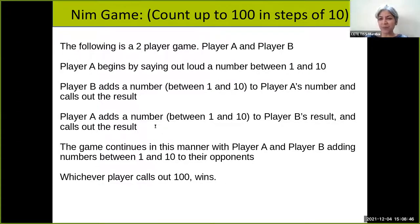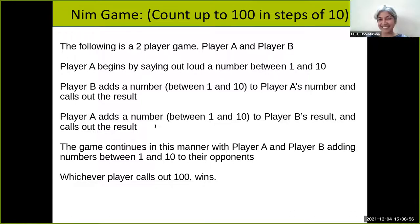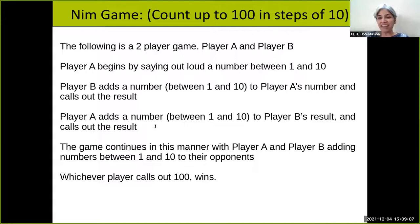Any bets? Seventy-eight. Rossi has a high chance of winning because he knows the rules very well, but maybe Mrunal will have beginner's luck. This is obviously a rigged game, so I'm going to win this game — or am I?